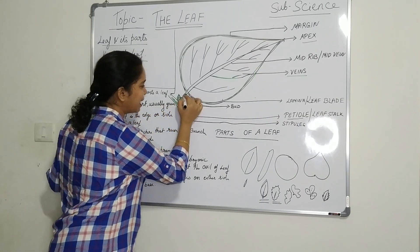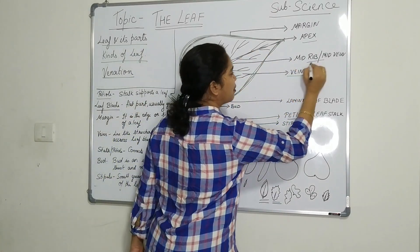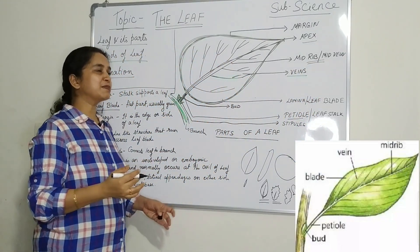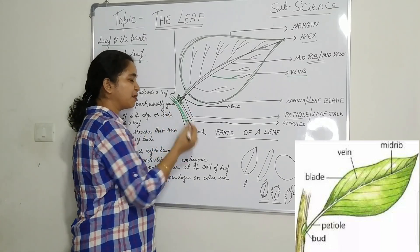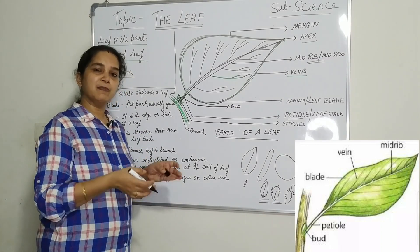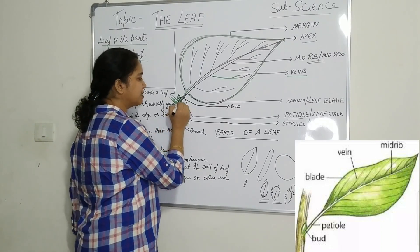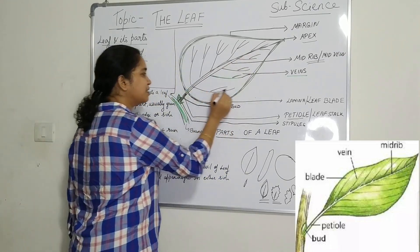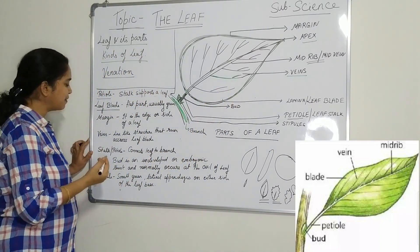The petiole extends inside the leaf, and this is called the midrib or the mid vein. This mid vein helps in the transportation of water and minerals. Water and minerals are absorbed by the root and distributed to different parts of the plant — through the stem, then to the branches, then to the leaves, and through the midrib into the leaf.